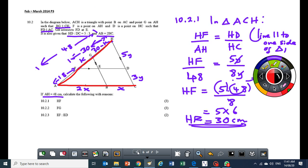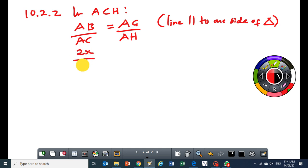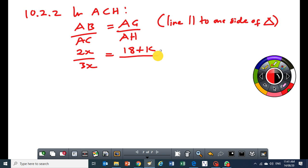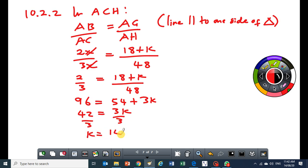Now AB in terms of X, AB is equal to 2X and AC is going to be equal to 3X. So I can write here and say 2X over 3X is equal to my AG becomes equal to 18 plus K. So I can write here 18 plus K. My AH is equal to 48. And these two will cancel out. So I'll end up having 2 over 3 is equal to 18 plus K over 48. And then I will cross multiply, so I will get 96 equal to 54 plus 3K. If I divide both sides by 3, I will get K equal to 14 centimeters.